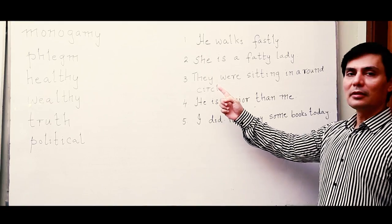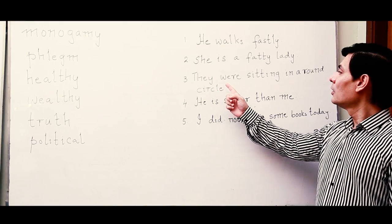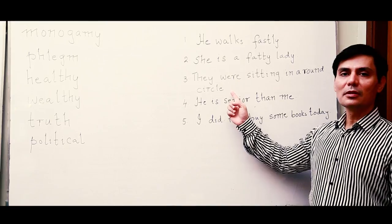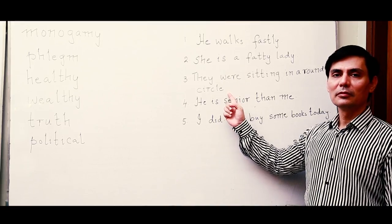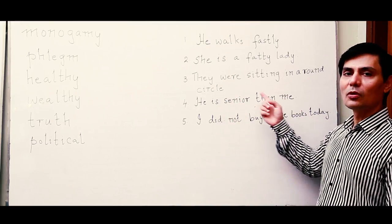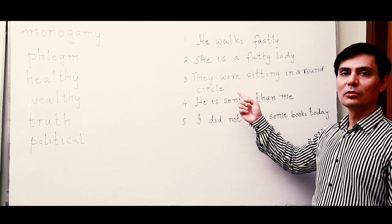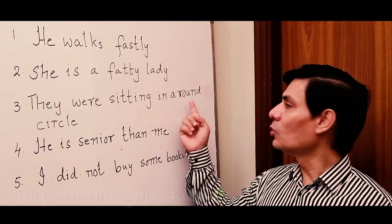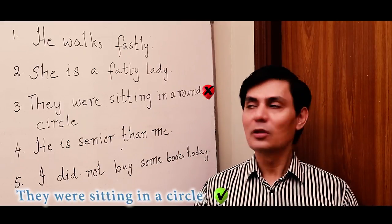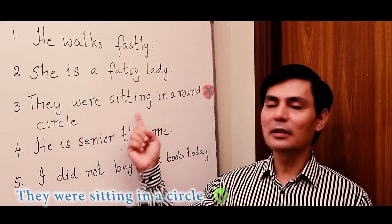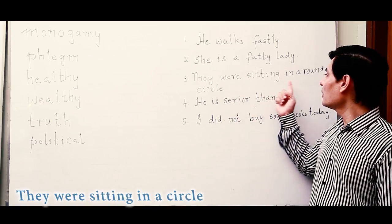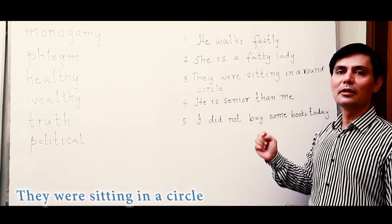The third sentence: 'They were sitting in a round circle.' A circle is always round, so you don't need to say 'round' — you cannot have a square circle. The correct sentence is 'they were sitting in a circle.' Saying 'round' is redundant.